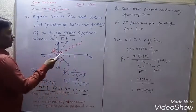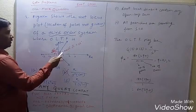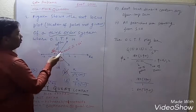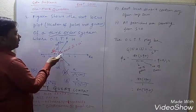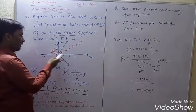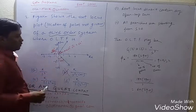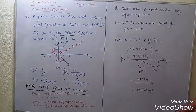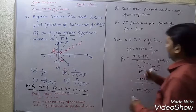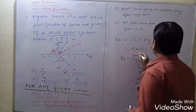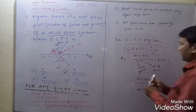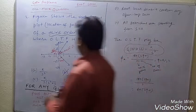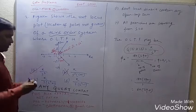The angles seen in the root locus are 60°, 180°, and 300°, which match our prediction. So this OLTF is the correct one, and the correct answer is A.